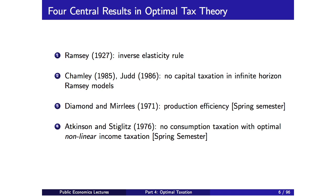You would think you want to tax things that are more elastic less, and we'll derive that optimal Ramsey tax formula in this lecture. The second very influential set of results are due to Chamley and Judd in two separate papers, which showed that it's optimal to have zero capital income taxes in the long run in infinite horizon Ramsey models. We'll touch upon that in this lecture and talk about how this result has shaped the policy debate, since it's behind why many people think we should have low capital income tax rates relative to labor income tax rates — though this has been challenged in more recent work.